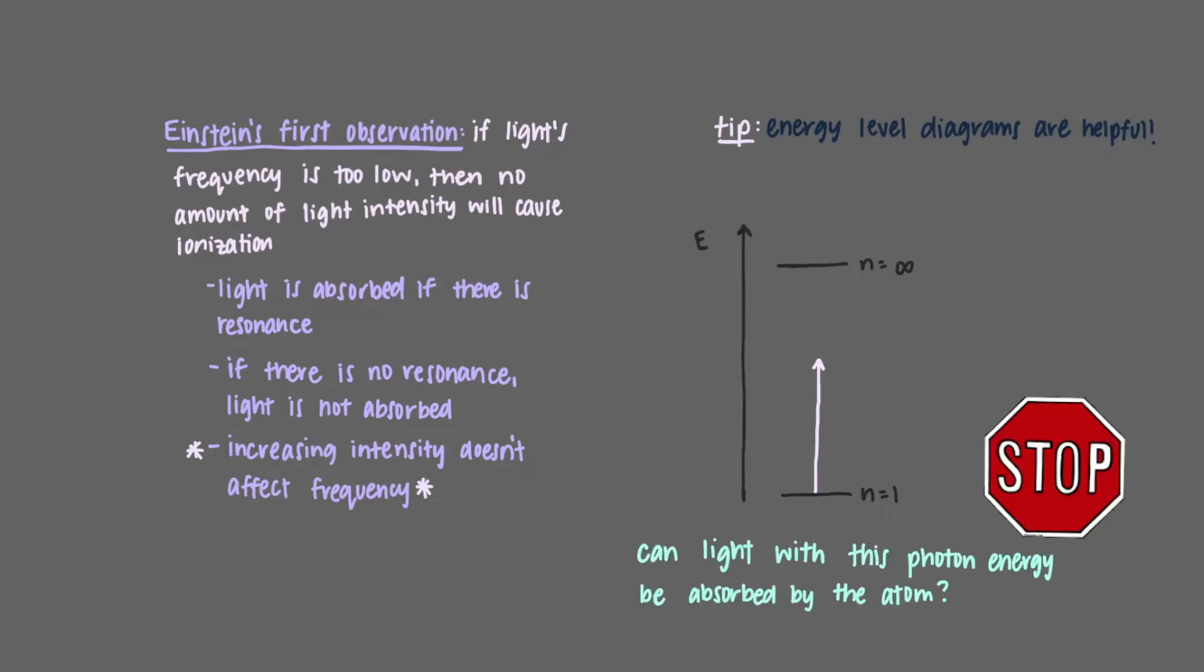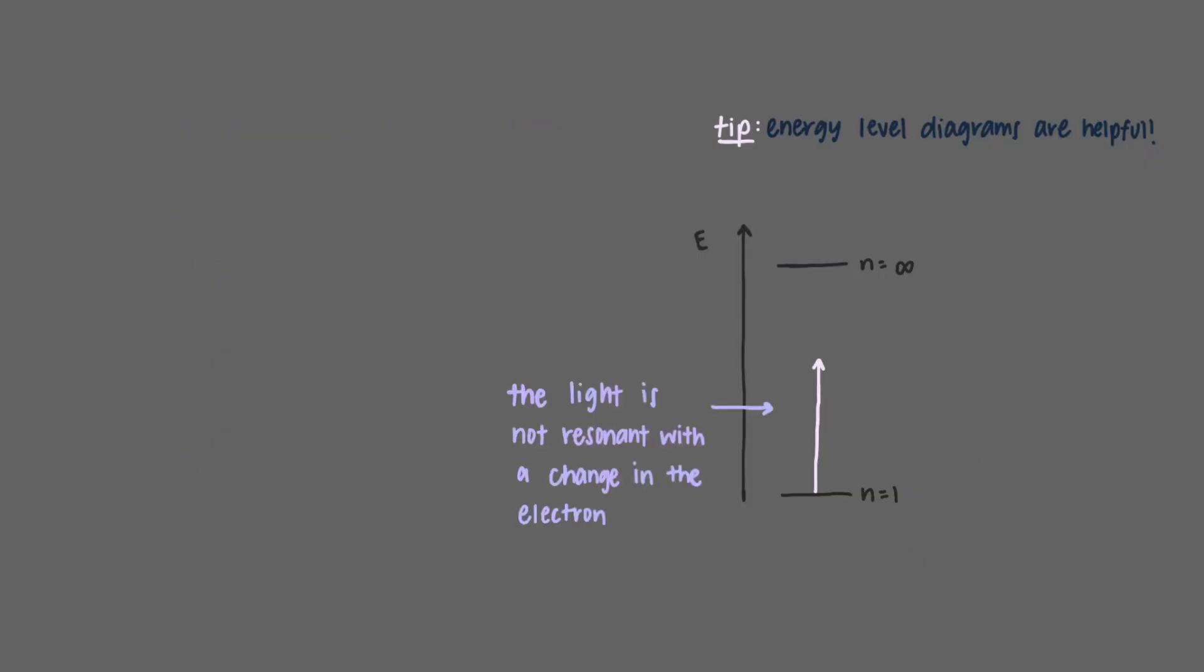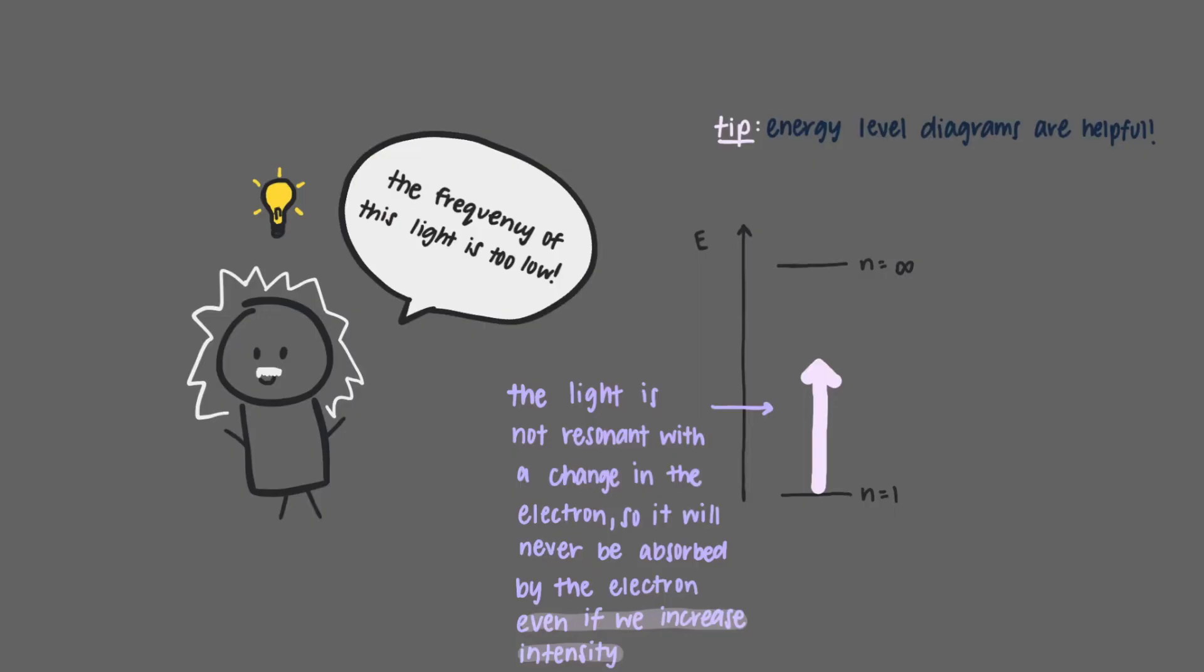Can light with this photon energy be absorbed by the atom? The light is not resonant with a change in the electron. We see this because it does not join the two states of the electron shown. That means that this light can never be absorbed by the electron. Even if we increase the intensity of the light, it will never be absorbed. This is what Einstein observed when the frequency of the light shining on the metal surface was too low.